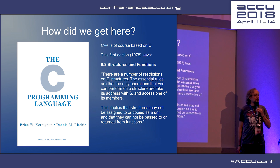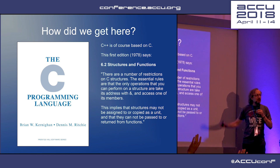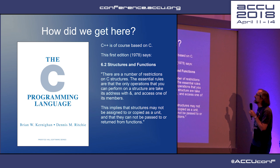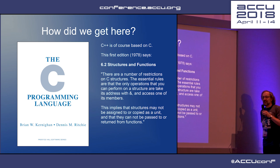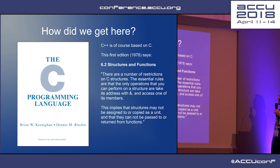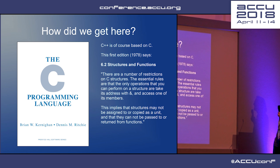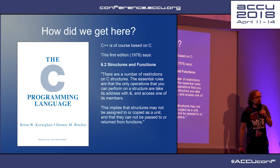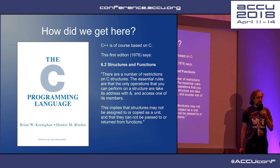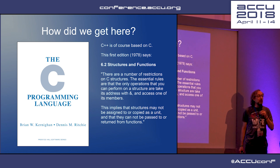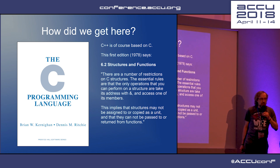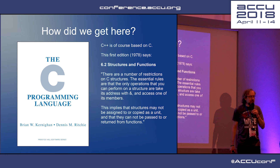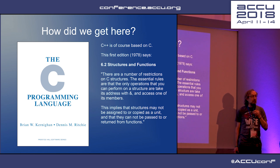Who's ever seen this book before? Good, we're in the right room. First edition, 1978. I won't say how old I was — it could be embarrassing. And in section 6.2, Structures and Functions, it says there are a number of restrictions on C structures. The essential rules are: all you can ever do with a structure is take its address or access a member.